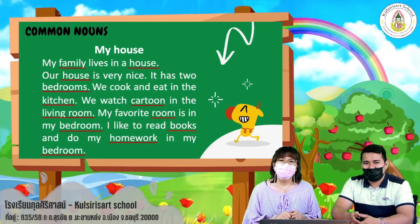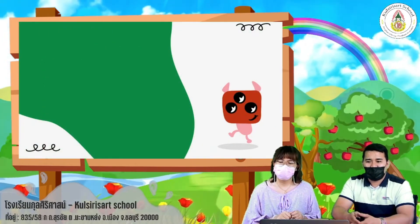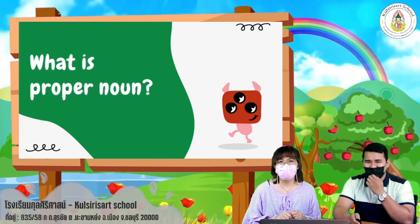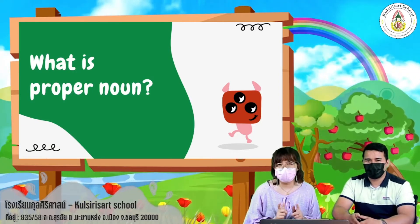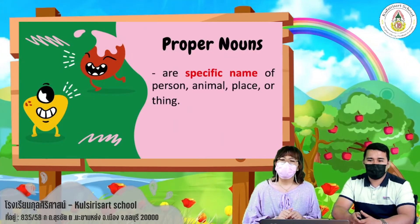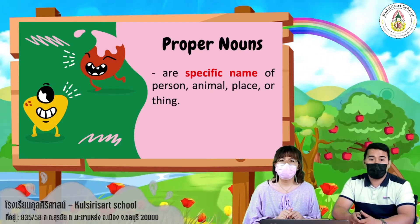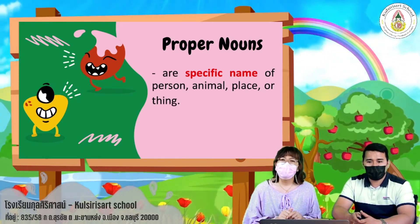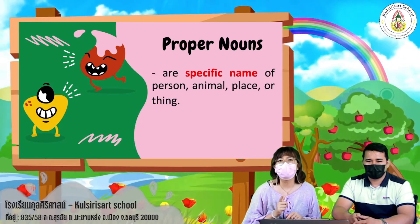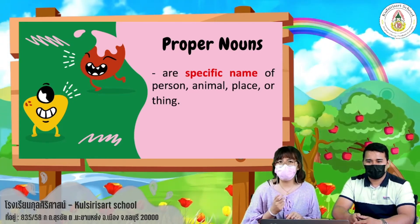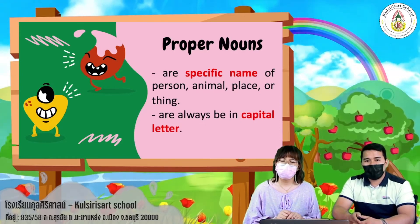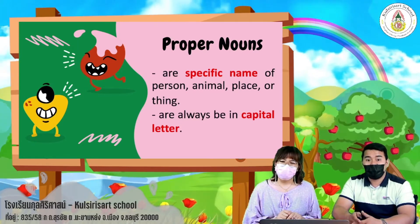Now let's learn about proper nouns. What are proper nouns? Proper nouns are the specific name of a person, animal, place, or thing. And remember, proper nouns are always written in capital letters.